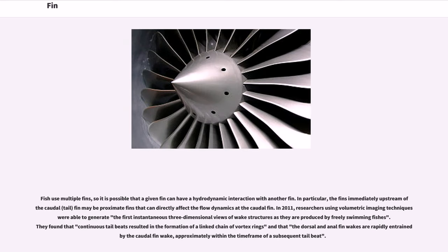Fish use multiple fins, so a given fin can have a hydrodynamic interaction with another fin. In particular, fins immediately upstream of the caudal tail fin may directly affect the flow dynamics at the caudal fin. In 2011, researchers using volumetric imaging techniques generated the first instantaneous three-dimensional views of wake structures produced by freely swimming fishes. They found that continuous tailbeats resulted in the formation of a linked chain of vortex rings, and that the dorsal and anal fin wakes are rapidly entrained by the caudal fin wake, approximately within the time frame of a subsequent tail beat.